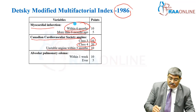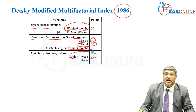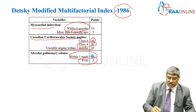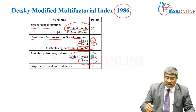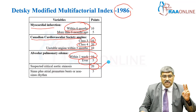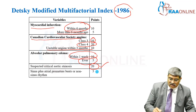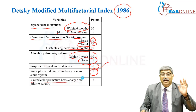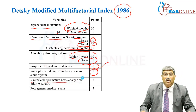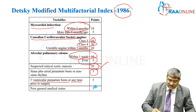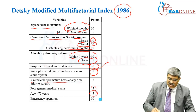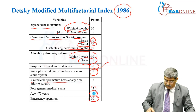Presence of pulmonary edema within 1 week is given 10 points, or previous history of pulmonary edema is 5 points. Critical aortic stenosis is given the highest points — 20 points. Sinus atrial premature beat or non-sinus rhythm is given 5 points, and 5 ventricular premature beats at any time prior to surgery is 5 points. Poor general medical status is given 5 points, elderly patient is 5 points, and emergency surgery is 10 points.